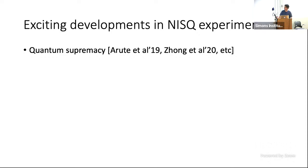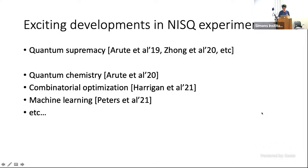One of the most significant recent advances in the field of quantum computing is the exciting developments in NIST experiments. For example, until today we have seen a total of four quantum supremacy experiments. And following the demonstration of quantum supremacy, the natural thing to do next is a proof-of-principle demonstration of quantum algorithms that can be implemented on current devices, and which we hope could potentially achieve a quantum advantage in the future.